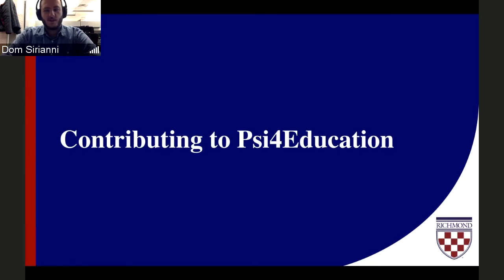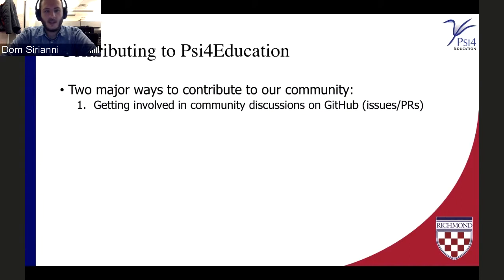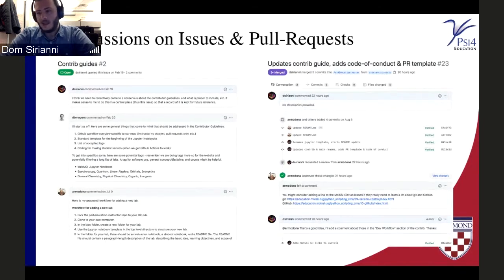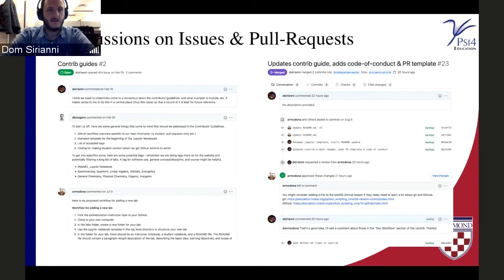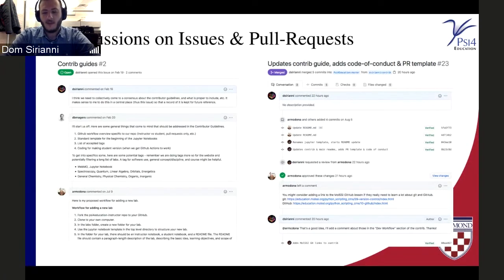There are two major ways of contributing to our community. The first is all online, and you don't necessarily have to have any specialized understanding to participate. GitHub allows us to collaborate across time zones and geographical distance, and basically allows us to have discussions and really hash out what we want this community to be. There are issues that people can raise if they find a typo, a problem, or want to request some content, but there are also pull requests, which I'll talk more about in a minute.